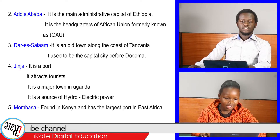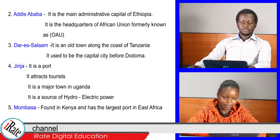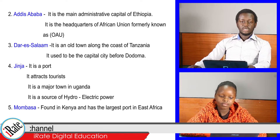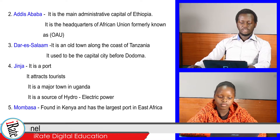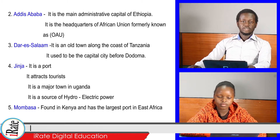4. Jinja. It is a port. It attracts tourists. It is a major town in Uganda. It is a source of hydroelectric power.